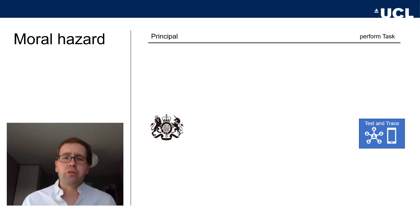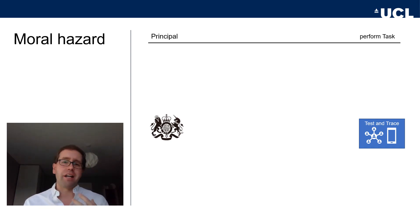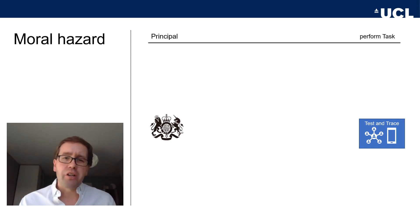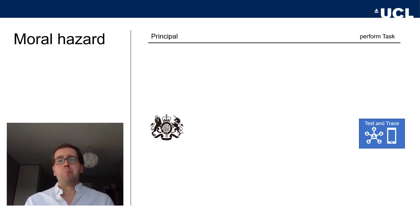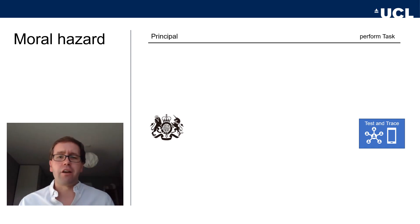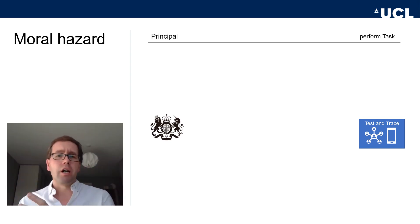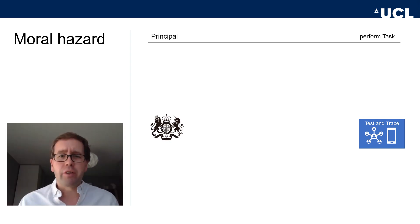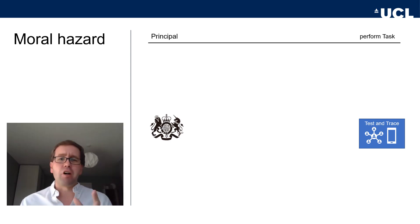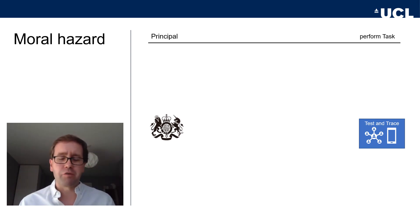More generally, why do principals delegate tasks to agents? It's for a variety of reasons, but they usually revolve around lacking information for the task at hand, lacking the expertise or know-how, cost considerations — setting up a whole new bureaucracy sounds quite costly compared to using an existing service provider — and sometimes more nefarious reasons such as avoiding blame for failure and unloading that blame onto some outsourced service provider.